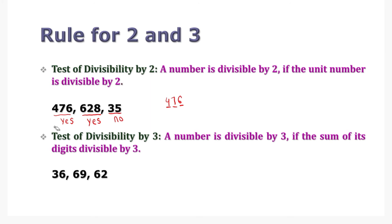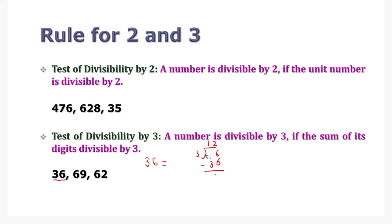Now let's see the test of divisibility by 3. A number is divisible by 3 if the sum of its digits is divisible by 3. For example, let's take the number 36. Instead of dividing 36 by 3 directly, you can simply add 3 plus 6, which is 9. When you divide 9 by 3, the answer is 3 with no remainder, so 36 is divisible by 3.